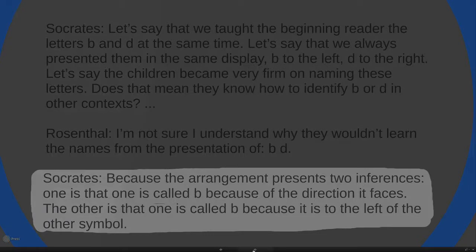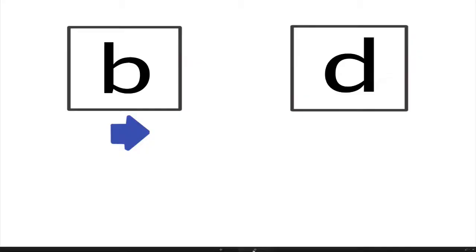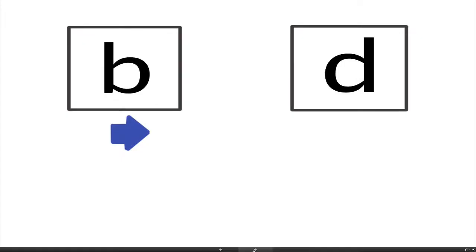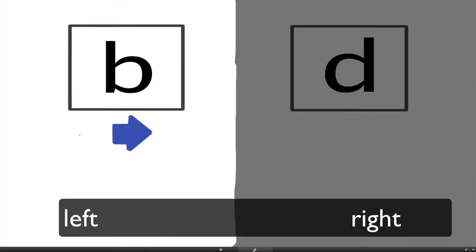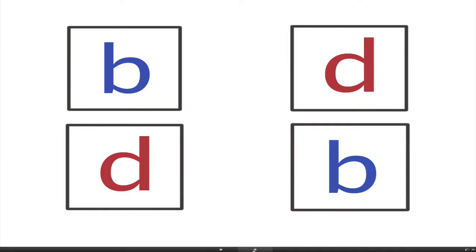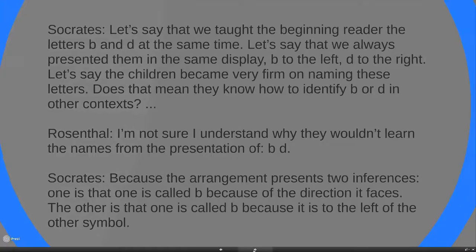Socrates says, because the arrangement presents two inferences, one is that one is called B because of the direction it faces. The other is that one is called B because it is to the left of the other symbol. Now you can hear what his concern is at this point. When you sequence the reading program, you have to make sure that you clearly sequence it so that only one inference is allowed and that inference is the correct one. So you can hear an account here where he's using a very solid sequence, but making sure that the inferences that are generated are crystal clear and work step by step by step to get the child to the end point of the reading program.